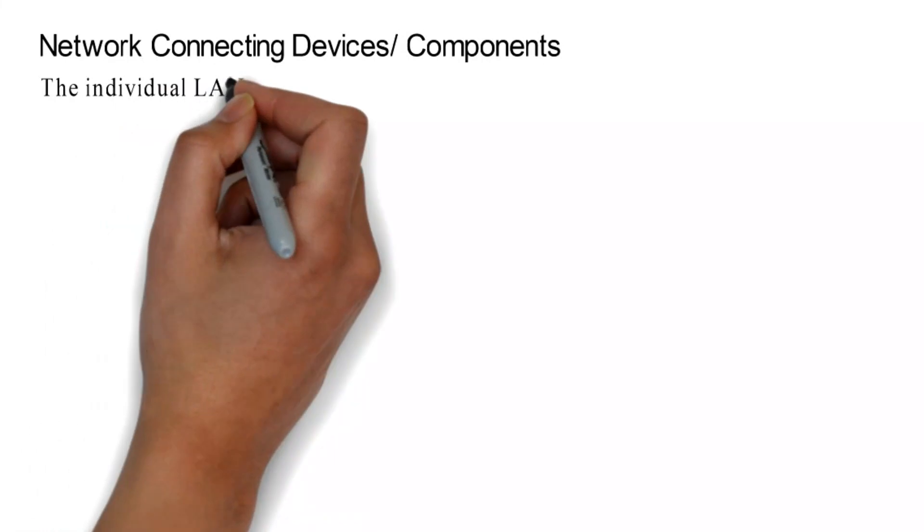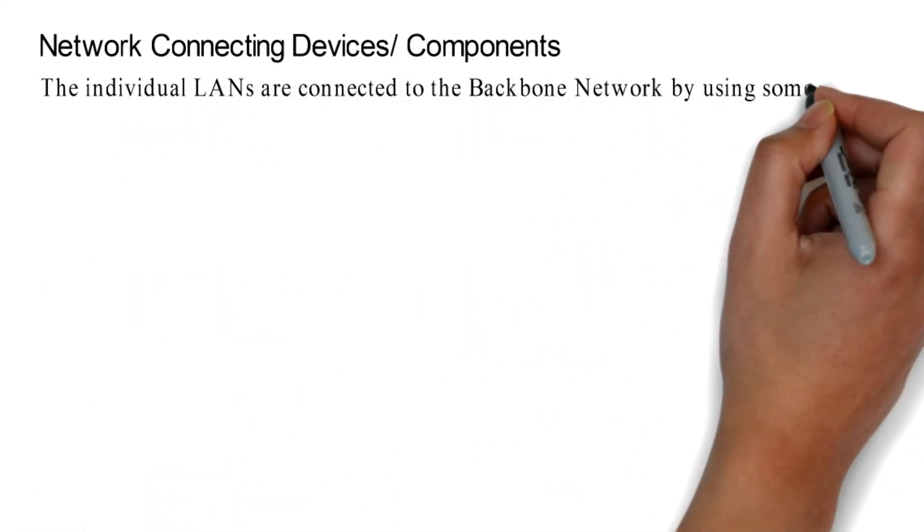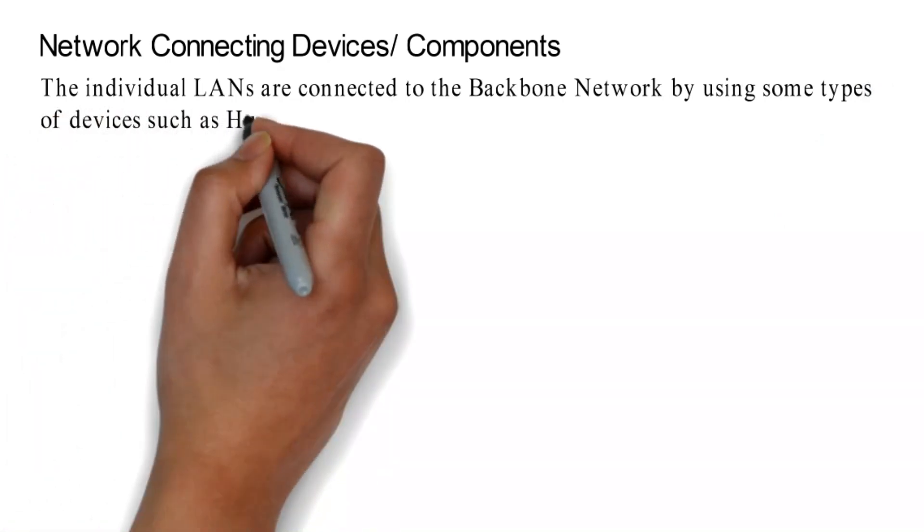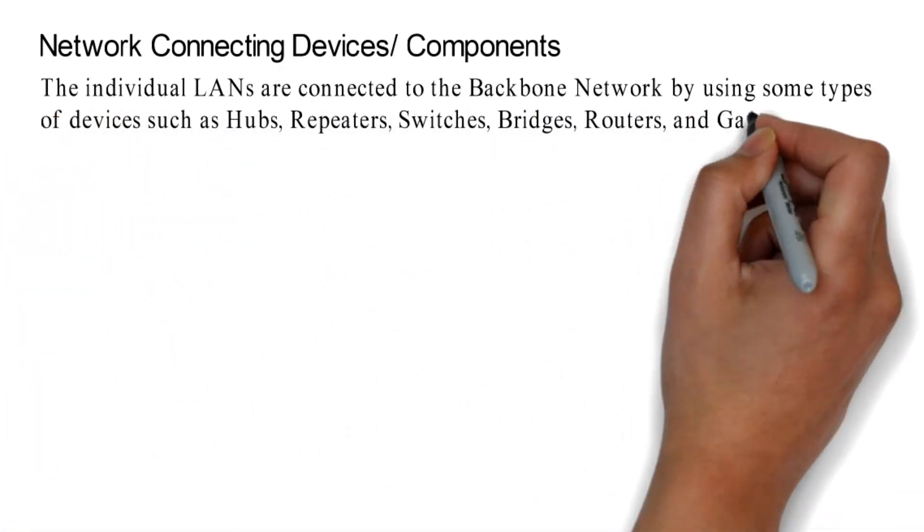Network Connecting Devices. The individual LANs are connected to the backbone network by using some types of devices, such as hubs, repeaters, switches, bridges, routers, and gateways.